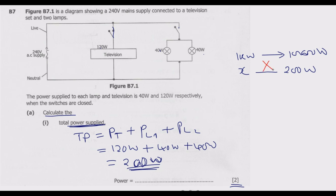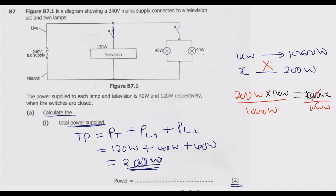We cross-multiply: 200 watts times 1 kilowatt equals x times 1000 watts. So we have 1000x watts. Since we are looking for x, we divide both sides by 1000 watts. The watts cancel, and we end up with 0.2 kilowatts. So the equivalent of 200 watts is 0.2 kilowatts.